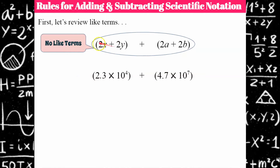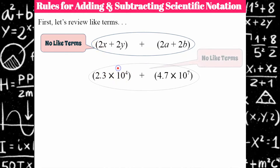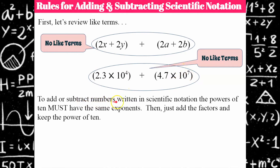When multiplying, we could multiply 2x times 2y and get 4xy, but we cannot add or subtract them. The same thing applies with scientific notation — these are not like terms because the powers of 10 are different. So to add or subtract numbers written in scientific notation, the power of 10 must have the same exponents.